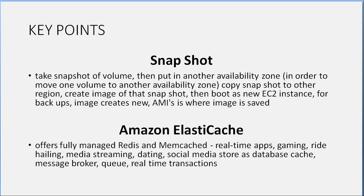Amazon ElastiCache: offers fully managed Redis and Memcached for real-time applications — gaming, ride-hailing, media streaming, dating, social media. Use cases include database cache, message broker, queue, and real-time transactions.